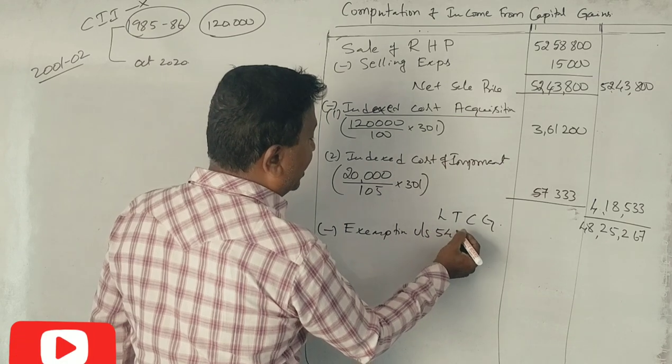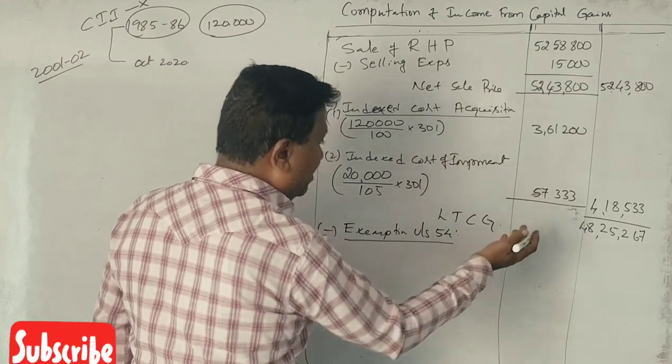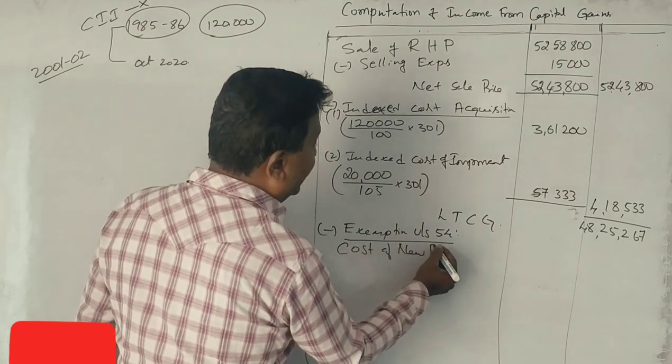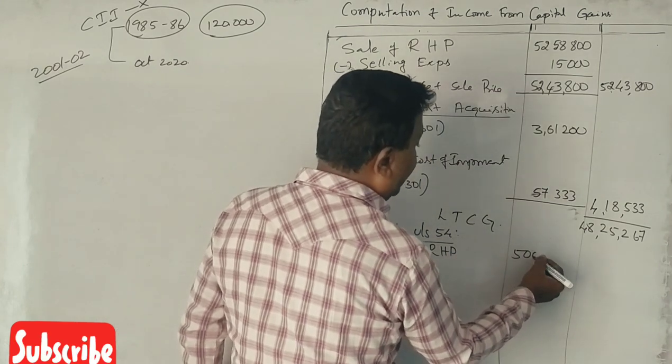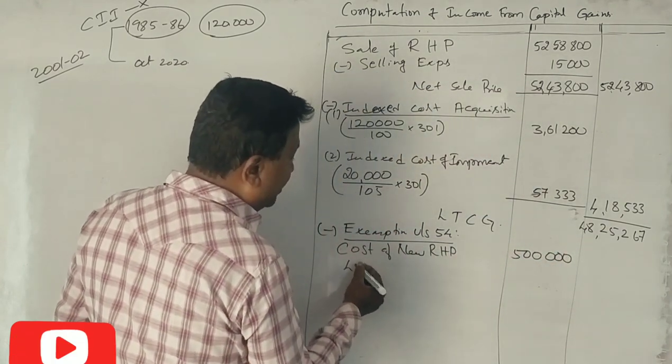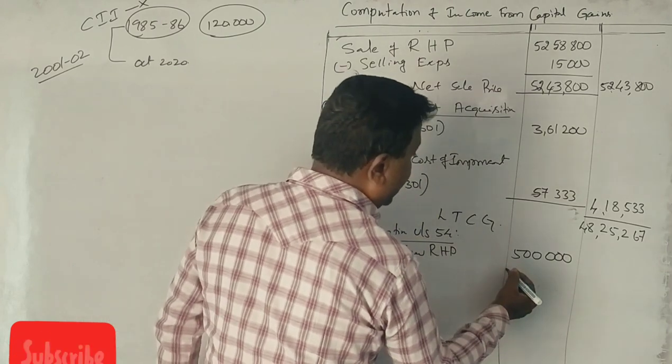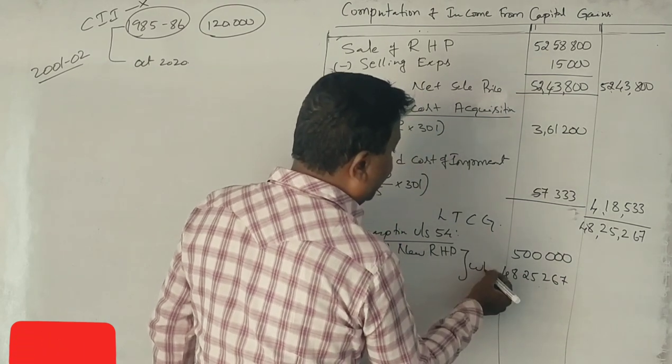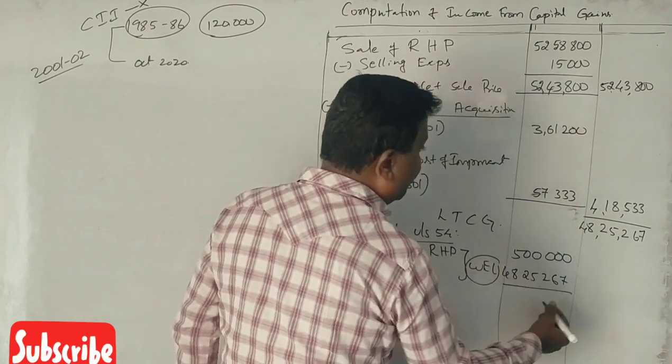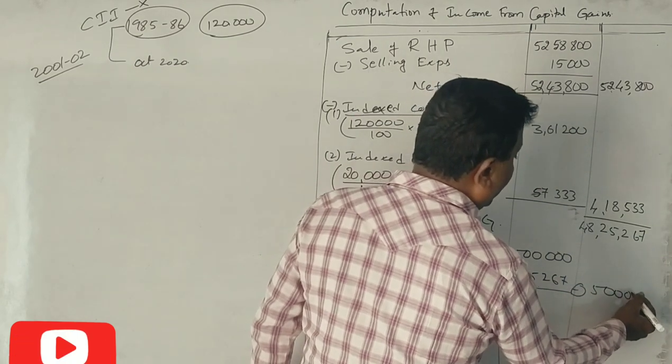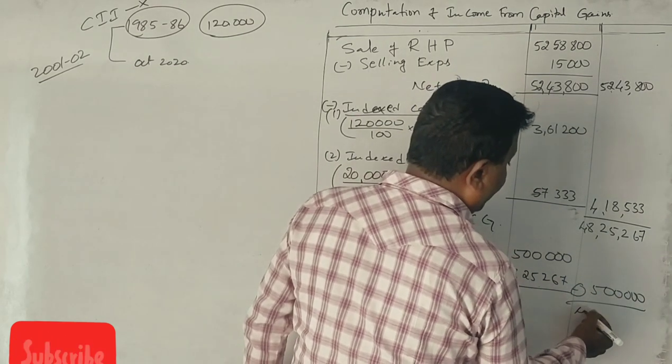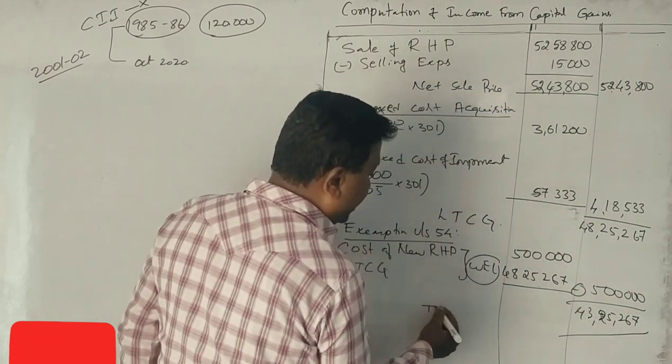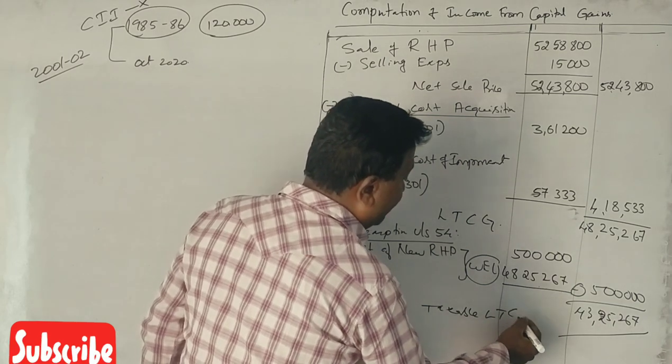Exemptions and deductions under Section 54. Cost of new residential house property, subject to long term capital gain Rs. 48,25,267. So Rs. 5,00,000 deduction. What is the taxable long-term capital gain?